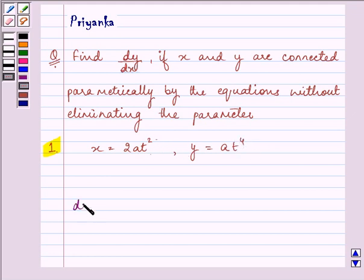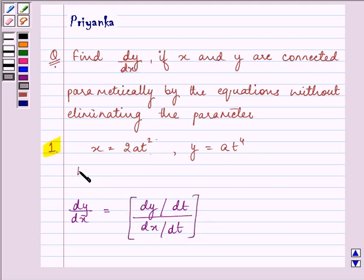Here we can find dy/dx by following a formula that says dy/dx = (dy/dt) / (dx/dt). The knowledge of this formula is the key idea we're going to use to proceed with our solution.